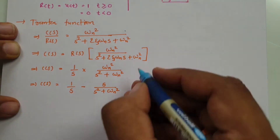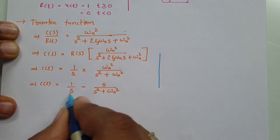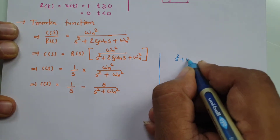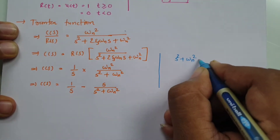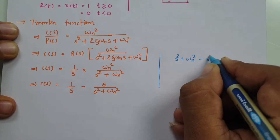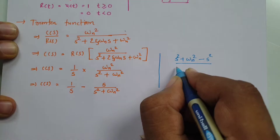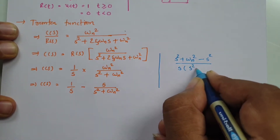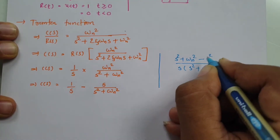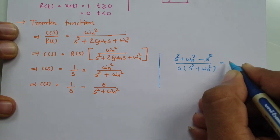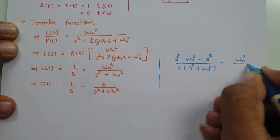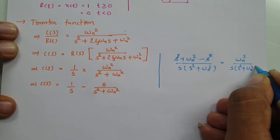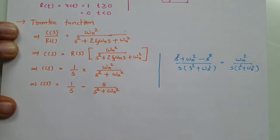You can see how that separation works. If you do cross multiplication, you get s squared plus omega_n squared minus s times s, which gives s squared divided by s times (s squared plus omega_n squared). The s squared terms cancel, leaving omega_n squared divided by s times (s squared plus omega_n squared), which matches our original C(s). So that separation is verified.